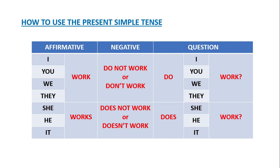If you understand this chart and you practice it, you won't have any problems applying this tense. I encourage you to use this chart and change the verb. For example, if you want to use the verb 'sing,' you can say in the affirmative: I sing, you sing, we sing, they sing, she sings, he sings, it sings. The only thing you need to change to practice is the verb — practice the present simple tense with whatever verb you want.